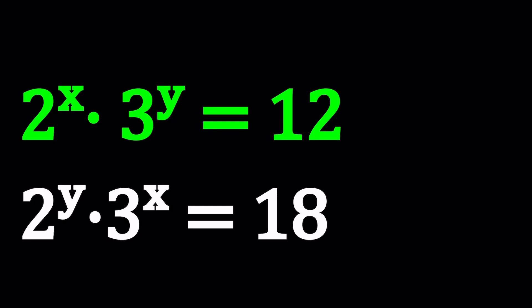Hello, everyone. In this video, we're going to be solving an exponential system of equations. We have 2 to the power x times 3 to the power y equals 12, and 2 to the power y times 3 to the power x equals 18. And we're going to be solving for x and y, which means this is a system of equations with two variables.